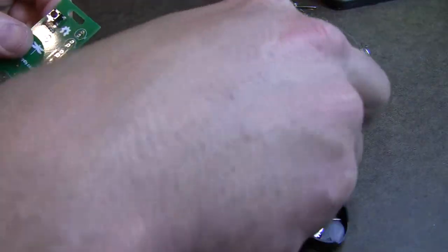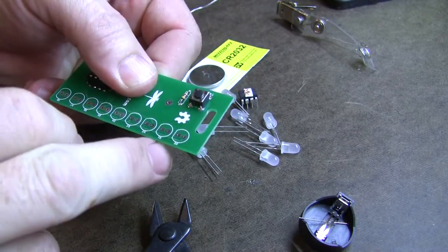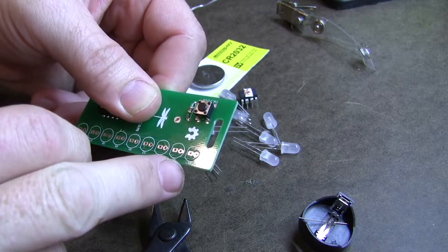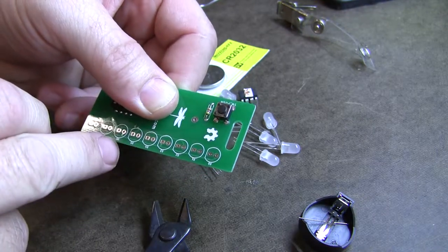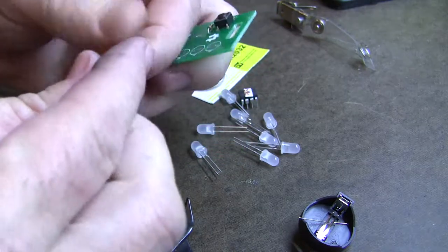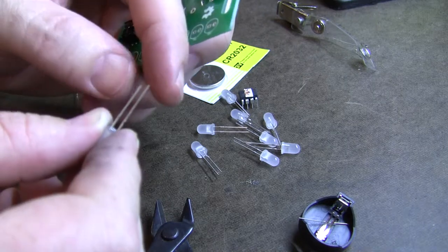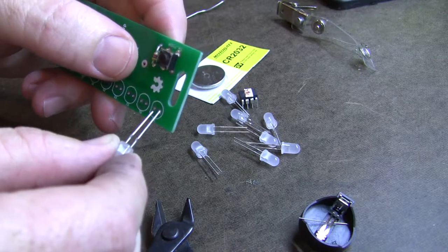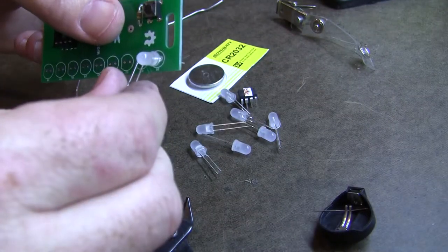Now you need to put in all of the LEDs. On the LEDs, you'll notice that one of the pads is square, one of them is round, for each one of those LED positions. When you look at the LED, you'll notice that one of the wires is shorter than the other. You need to put the short lead into the square hole for this blinky. And you can just go ahead and put them all in like that at the same time.